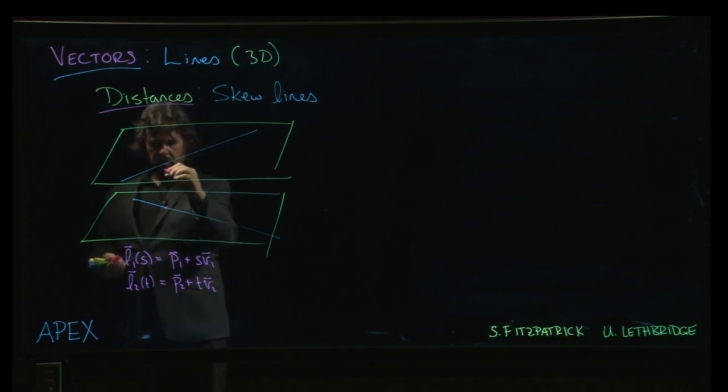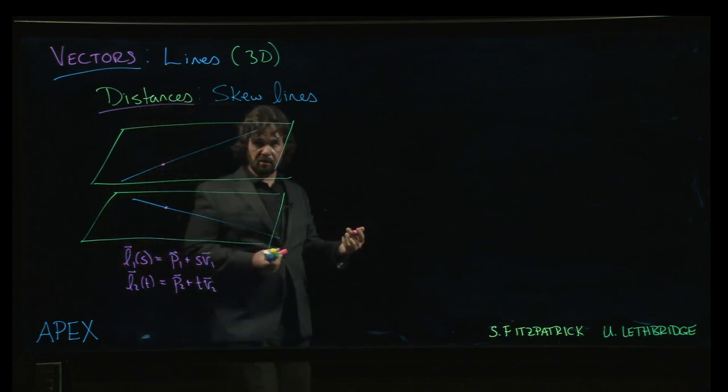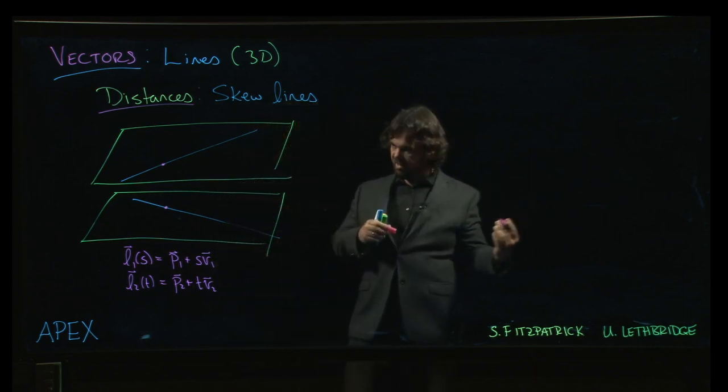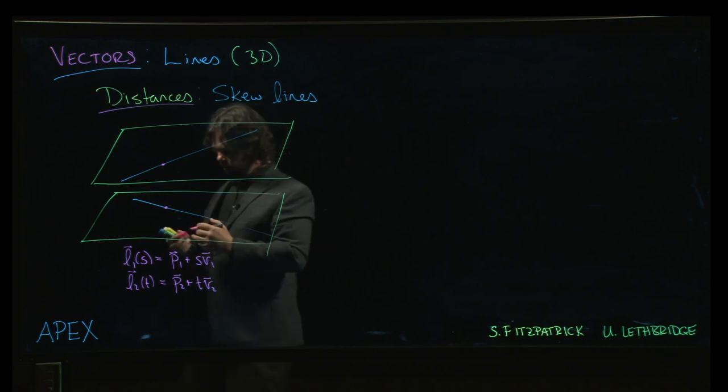And so somewhere in space, there's a point on either line that sort of minimizes the distance. So among all possible choices of point on the first line and on the second, there's a minimizing distance.